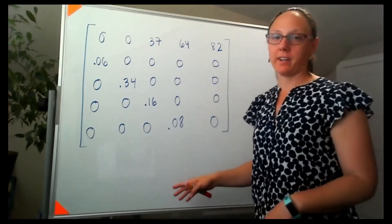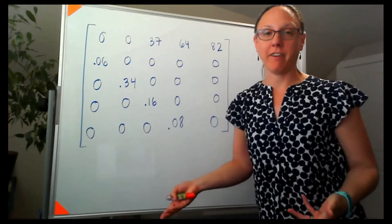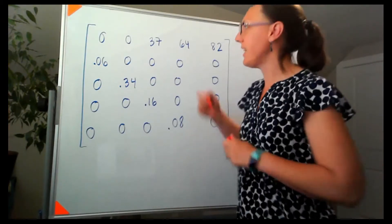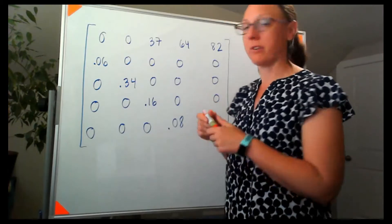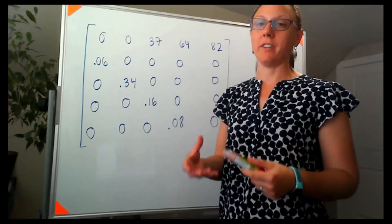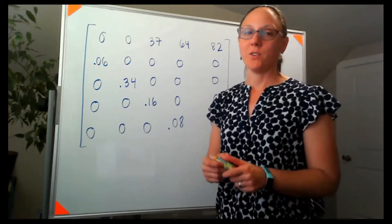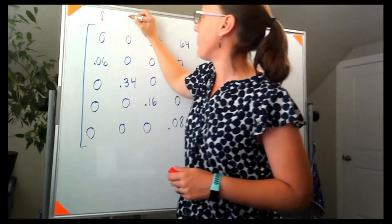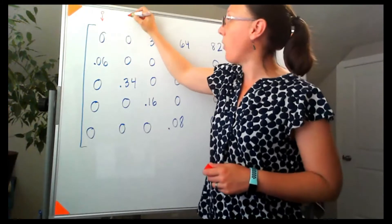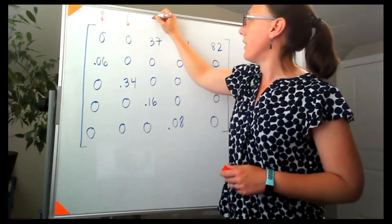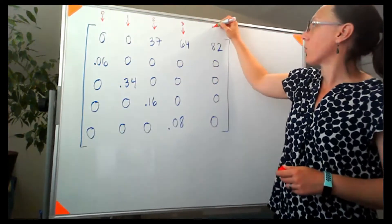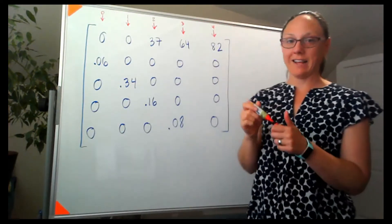So the first thing that we should recognize is this is a five by five matrix, which means we have five age classes, and traditionally we start the numbering at zero. So traditionally this is coming from my age zero, my age one, age class two, age class three, and age class four.